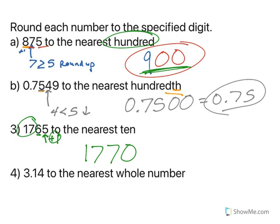So 3.14, which is pi, to the nearest whole number. So 3 is the nearest whole number. 1 is less than 5, so I round down. So my nearest whole number is just 3. Let's do some more.